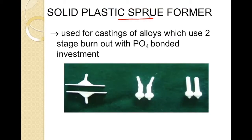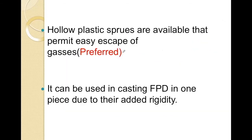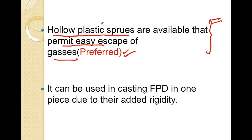Solid plastic sprue formers are used for casting of alloys which use two-stage burnout and are used with phosphate bonded investment material. The most preferred type of sprue formers are hollow plastic sprue formers. They are preferred because they permit easy escape of gases. Due to their rigidity, they can be used in casting of FPDs in one piece. The main advantages are: easy removal of gases, and due to their rigidity, they can be used in a single piece in case of FPDs.